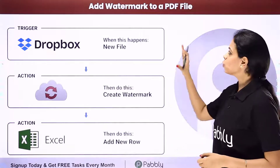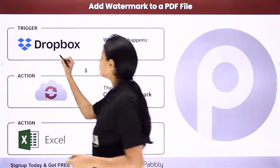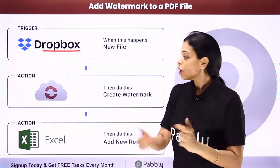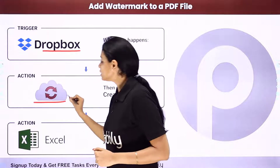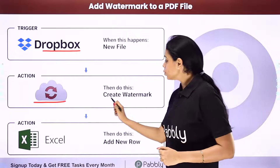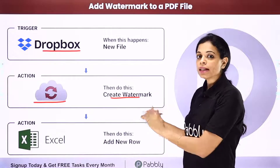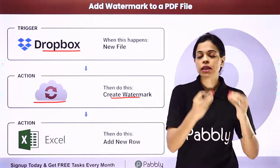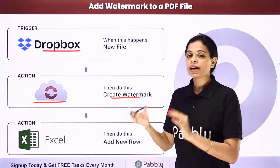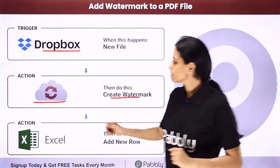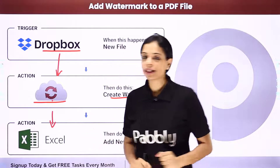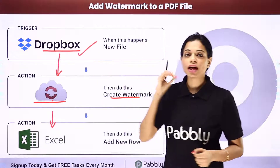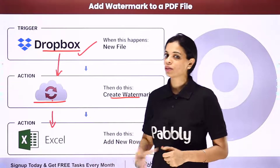In this video, we are going to see how to add a watermark to a PDF file. Let's say that you have certain files in your Dropbox. Every time a new file is added to that particular folder, automatically with the help of Cloud Convert, which is an online file converter, you would be able to create a watermark. Once it is created, you can update all the details like the file name, the original file, and the watermarked file in your Excel sheet. Your trigger application would be Dropbox and your action applications would be Cloud Convert and Microsoft Excel.